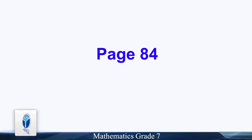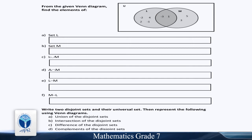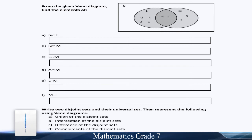Page 84: From the Venn Diagram, find the elements of set L, set M, L union M, A union M, L minus M, and M minus L. Write two disjoint sets and their universal sets. Then represent the following using Venn Diagrams: union of disjoint sets, intersection of disjoint sets, and complement of disjoint sets.